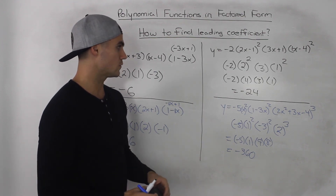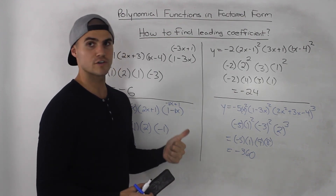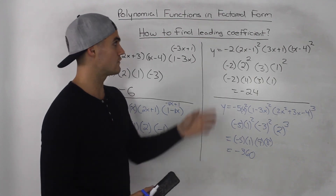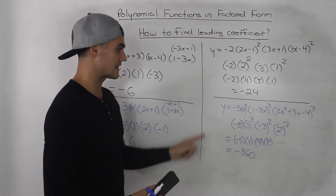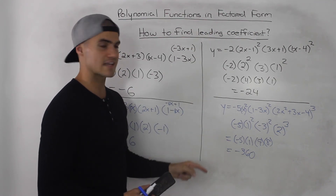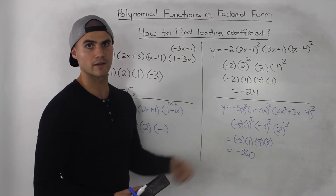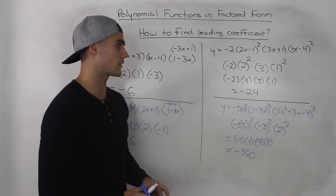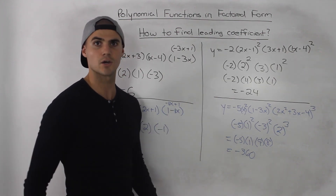So far, we are able to get the leading coefficient and the degree of a polynomial in factored form. The only thing left to figure out is how to get the constant term, or the y-intercept — and that's the most simple part. That's in the next video.